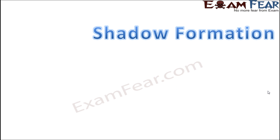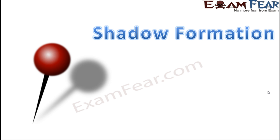Now we have been talking about images and reflection. But have you ever noticed that with a lot of objects, images are not formed — rather shadows are formed. So whenever these objects are placed in presence of light, you see a black shadow being formed of that object. So what is this shadow and how are shadows formed?